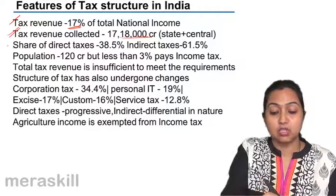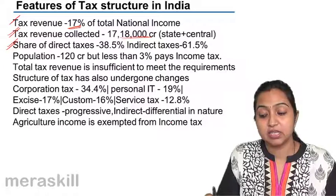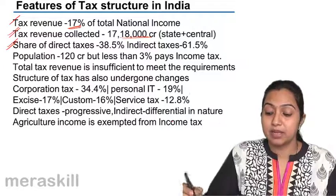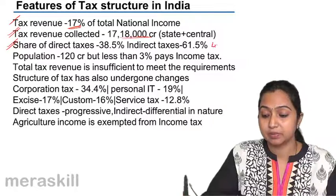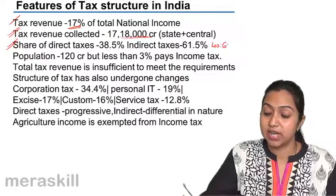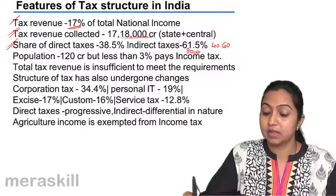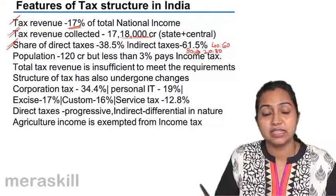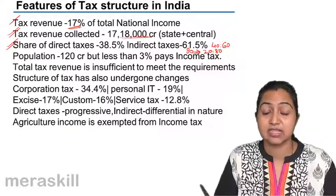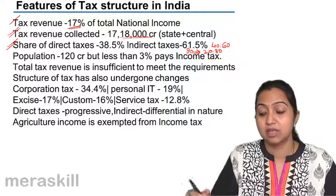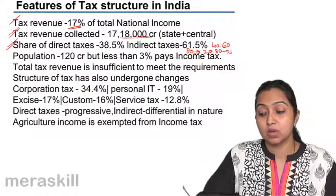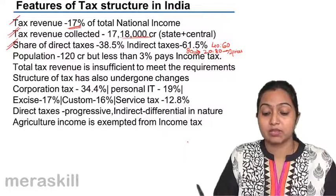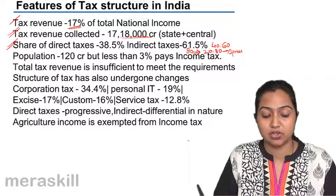The share of direct taxes to indirect taxes is 38 or 39 to 61%. Earlier in the 1950s, the proportion of direct to indirect tax was 40 to 60. But in the mid-80s, the proportion came down to 20 to 80 — that is, 20% came from direct taxes and 80% from indirect taxes, indicating high inflationary conditions prevailing in the country at that time.